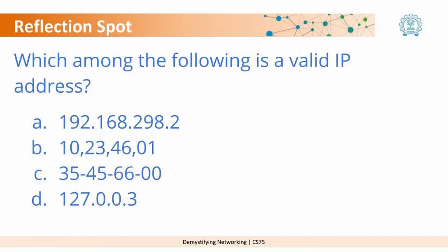The question is: which among the following is a valid IP address? Option A: 192.168.298.2. Option B: 10,23,46,01. Option C: 35-45-66-00. Option D: 127.0.0.0.3.